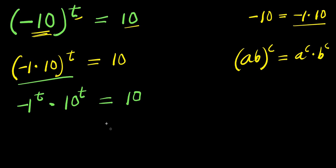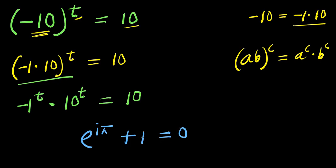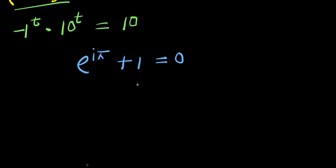Now, at this particular point, let's consider Euler's identity. If you have e to the power of i times pi plus 1, this equals 0. So from here, you move 1 over to the other side, it becomes negative 1. So e to the power of i times pi equals negative 1.